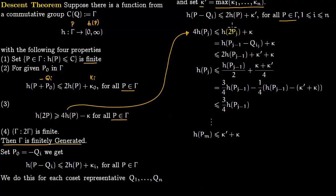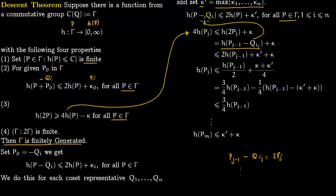From property three, 4H(Pⱼ) ≤ 2H(Pⱼ) + κ applied to the recursive equation 2Pⱼ = Pⱼ₋₁ − q_{iⱼ}, together with the inequality H(Pⱼ₋₁ − q_{iⱼ}) ≤ 2H(Pⱼ₋₁) + κ′, gives after combining: H(Pⱼ) ≤ (H(Pⱼ₋₁) + κ + κ′)/4. Splitting this up yields H(Pⱼ) ≤ (3/4)H(Pⱼ₋₁) − (1/4)(H(Pⱼ₋₁) − κ′ − κ).